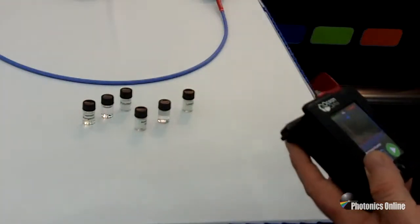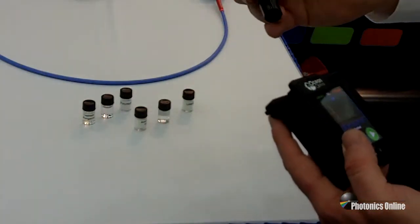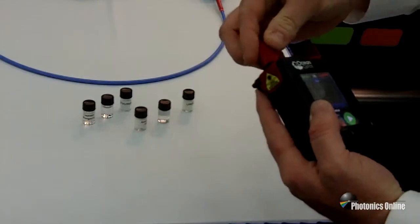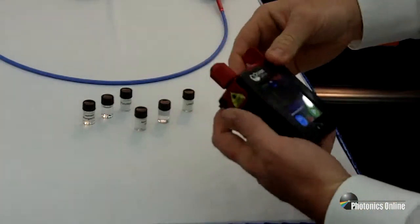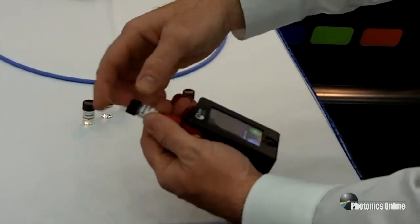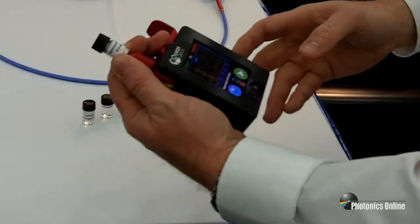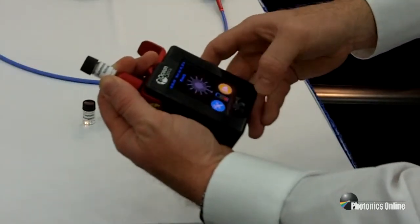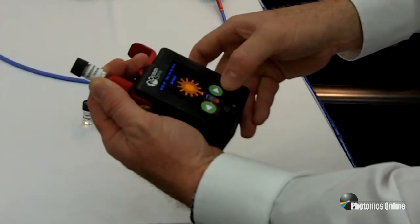We can also use the standoff feature to measure powders or other solid samples outside of the instrument. To do this, we just simply place, in this case, the sample inside the vial and go through the same procedure to make the measurement.